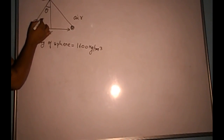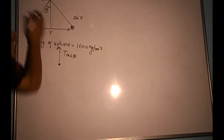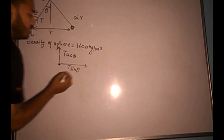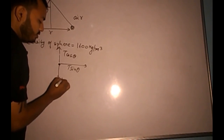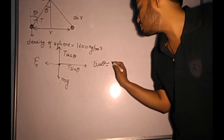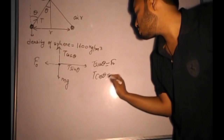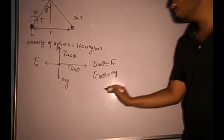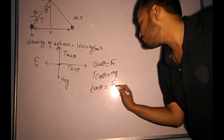Let's draw the free body diagram (FBD). There is tension T with components T·cos θ vertically and T·sin θ horizontally. In vertical equilibrium, T·cos θ = mg. In horizontal equilibrium, T·sin θ = F₀ (force between charges in air). Dividing the first equation by the second gives: tan θ = F₀/mg.